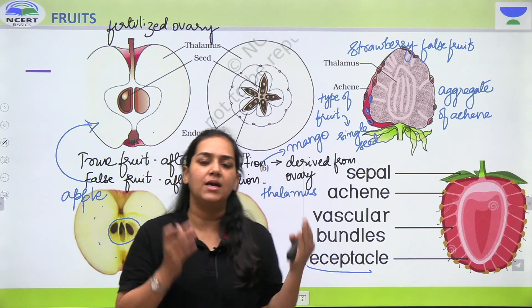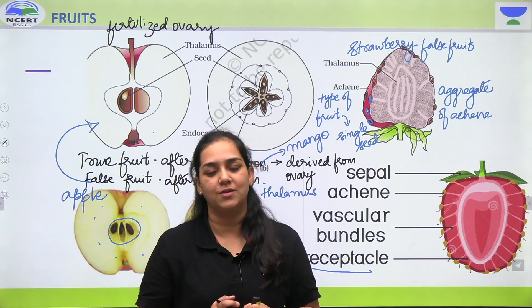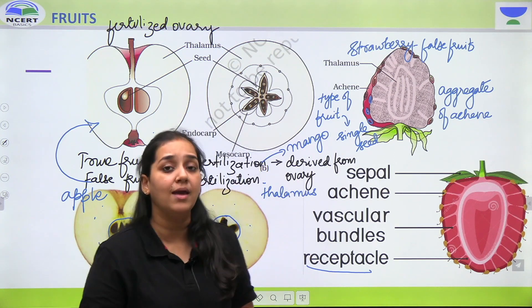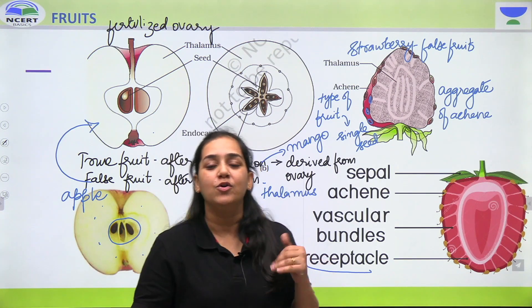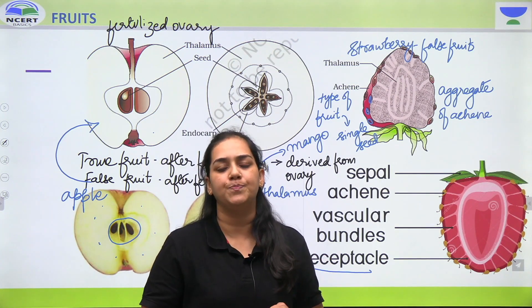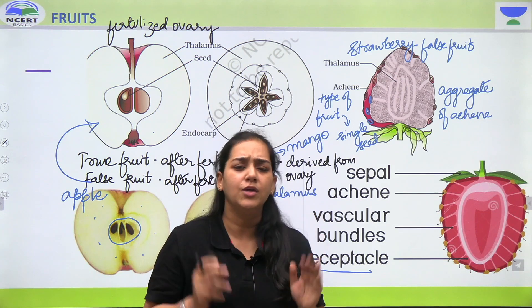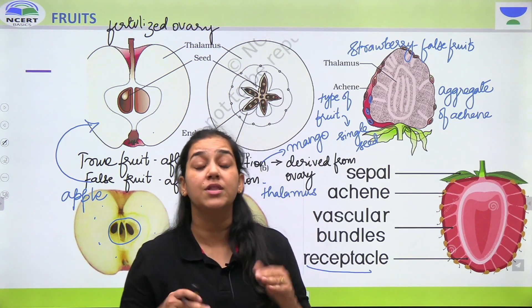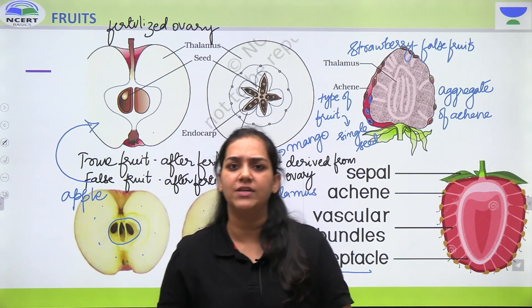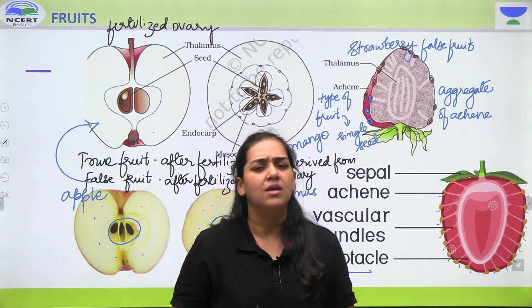True fruit ka example kya hai? Mango. Mango true fruit ka example hai. Toh ye toh hue fruits which are formed after the process of fertilization.